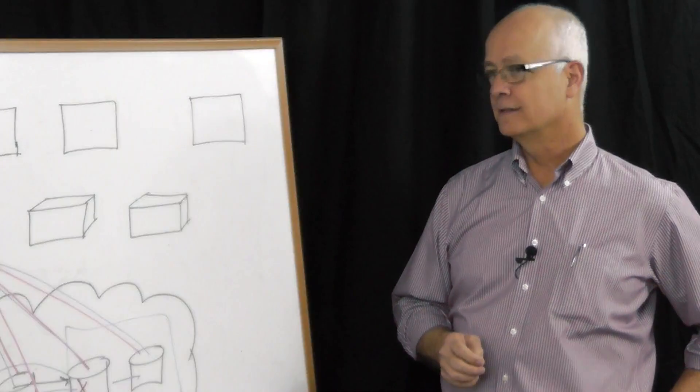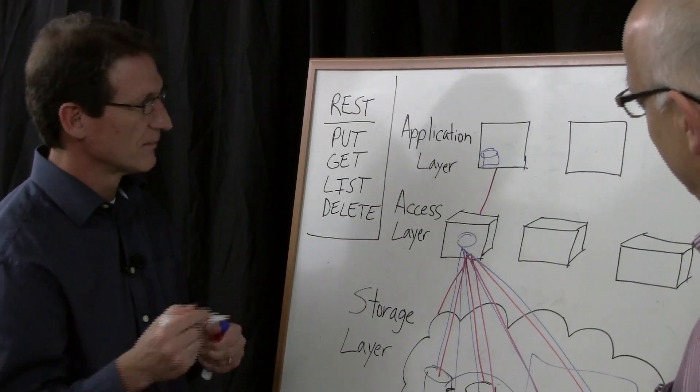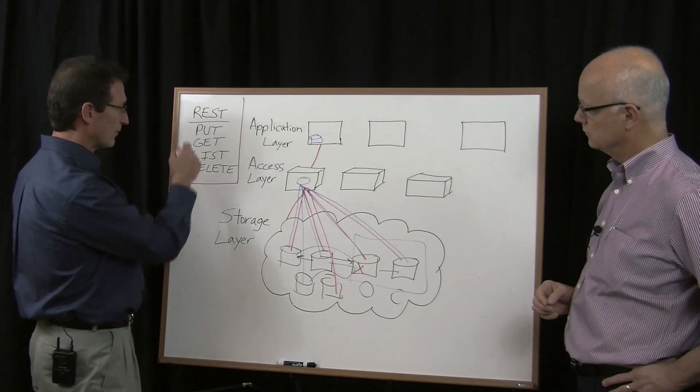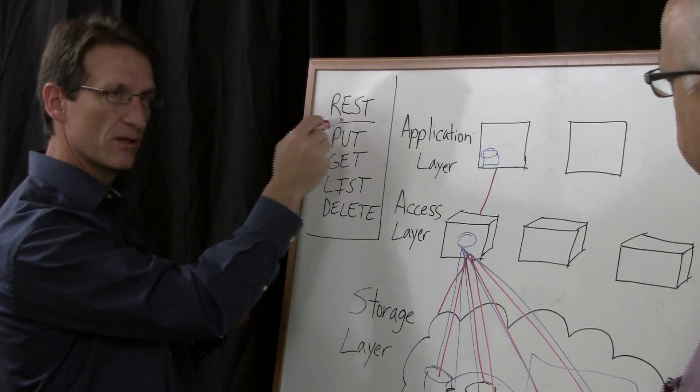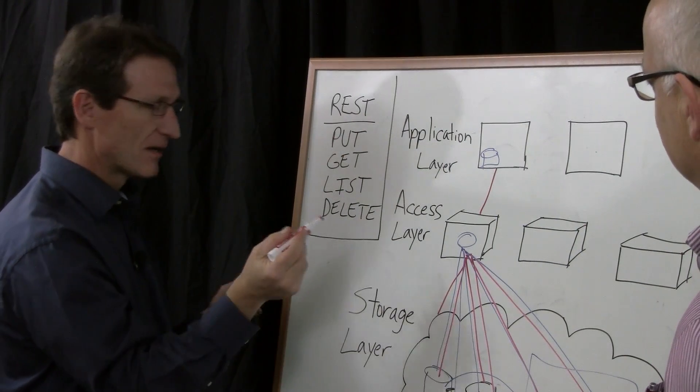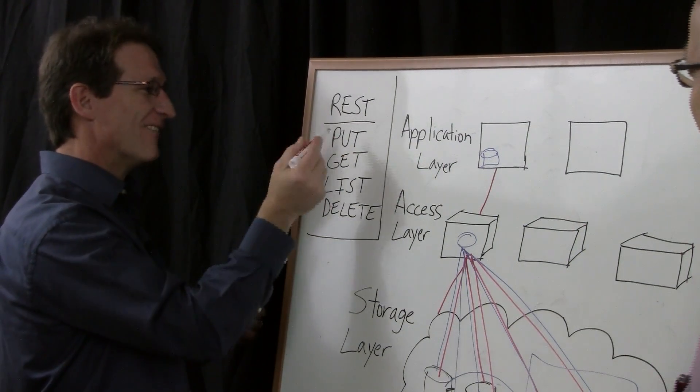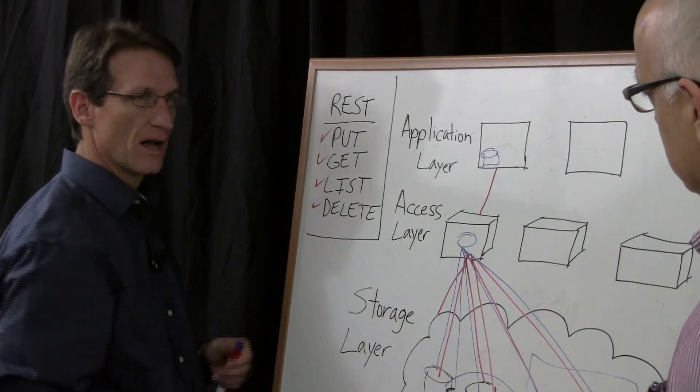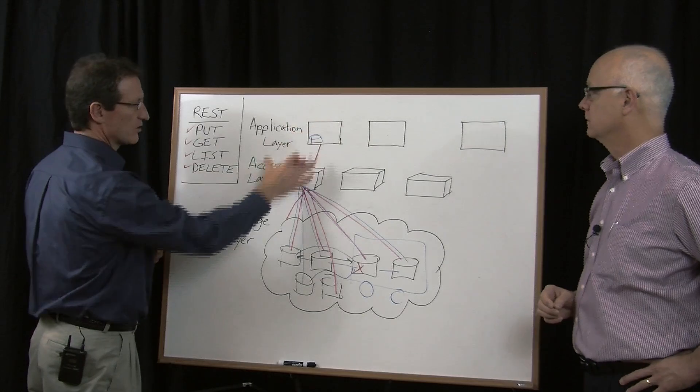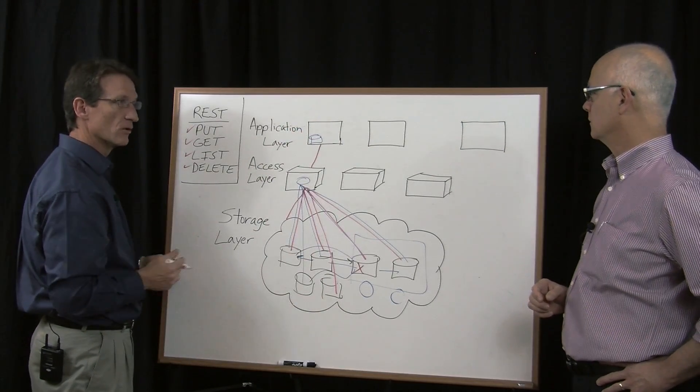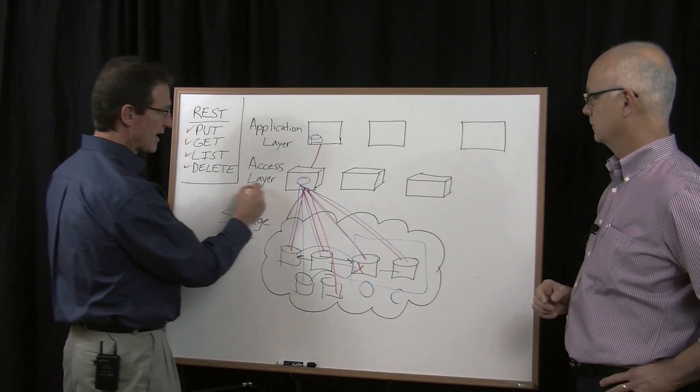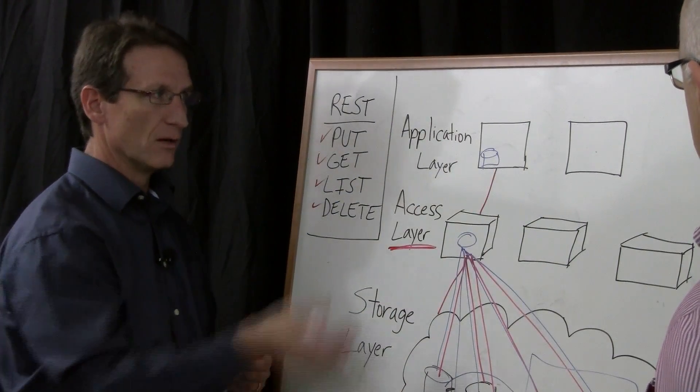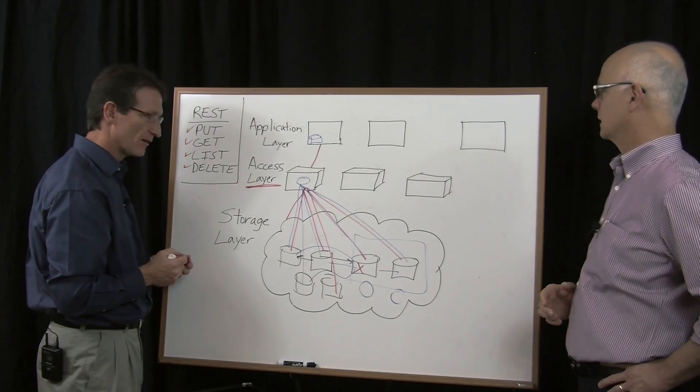The other thing that's interesting about object storage systems is the protocol to write data into an object storage system is very simple. It's a REST protocol, which stands for Representational State Transfer. Very simple. Put an object, get an object, list the objects that are in my storage container, delete an object. So it's very simple for an application to actually start talking to an object storage system if they use this REST protocol. And that's what our access layer does. It presents that interface to the application with an API.